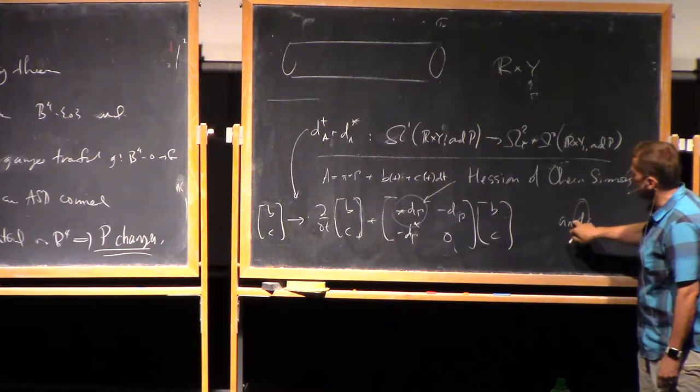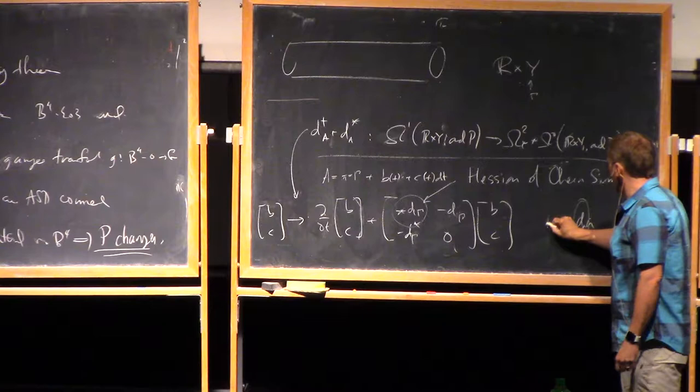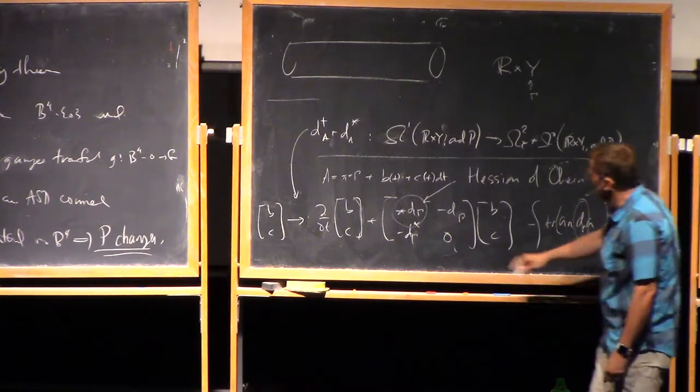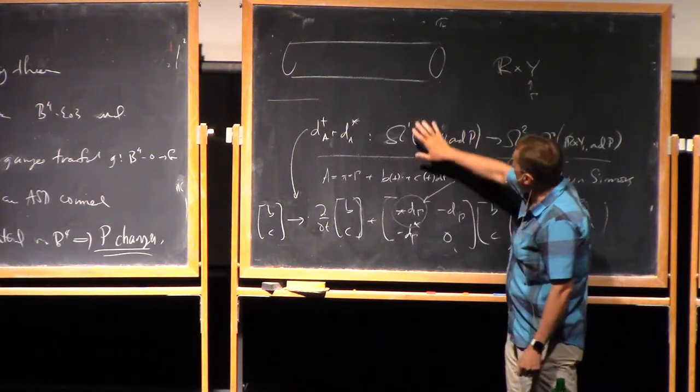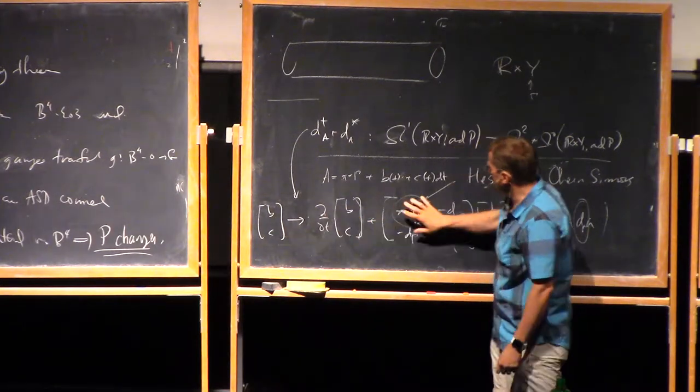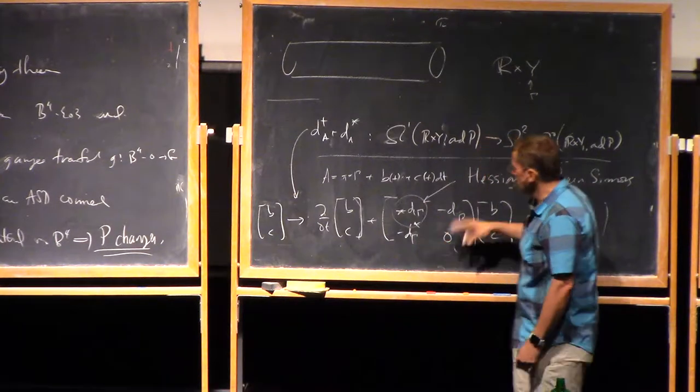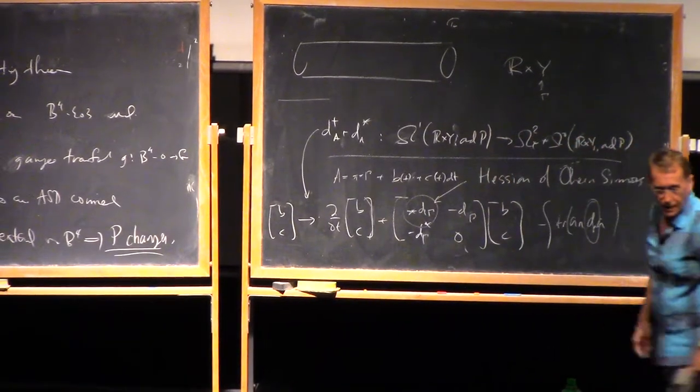You have to put in a couple of Hodge stars in here to make it into an inner product. Right, and then the Hessian becomes this. So this, the operator that controls the deformations of the anti-self-dual equation looks like the Hessian. I mean, it looks like d by t plus the Hessian, as in finite-dimensional Morse theory, but because of the gauge group, there's some extra terms involved.